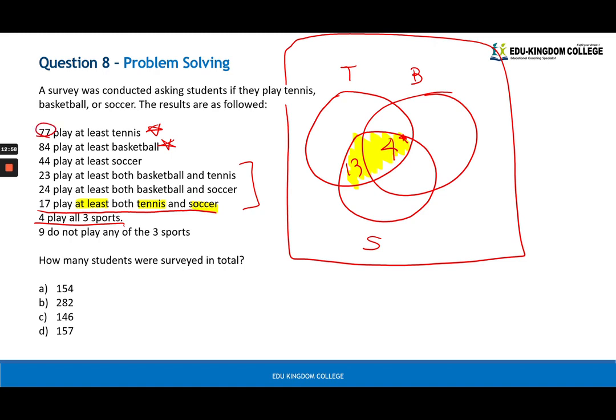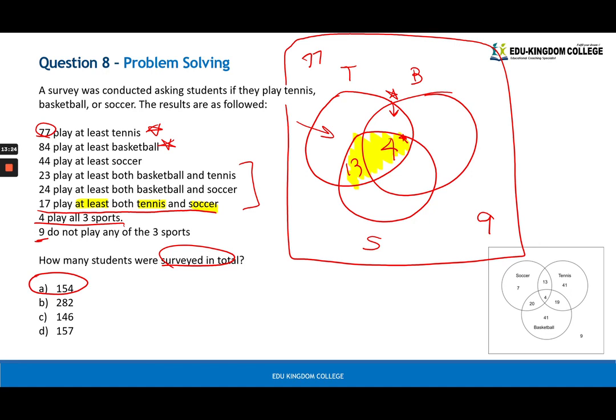Remember, nine don't play any sports. You have to add the nine at the end to find how many were surveyed in total. I think I have the solutions there. If you add everything up you should get A.